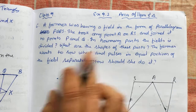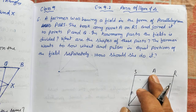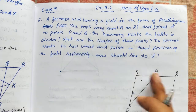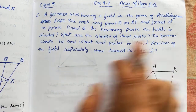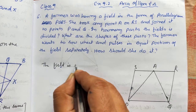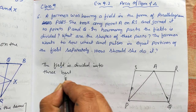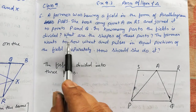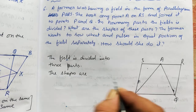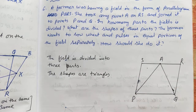A farmer was having a field in the form of parallelogram PQRS. She took any point A on RS and joined it with points P and Q. The field is divided into three parts, and the shapes of these parts are all triangles.